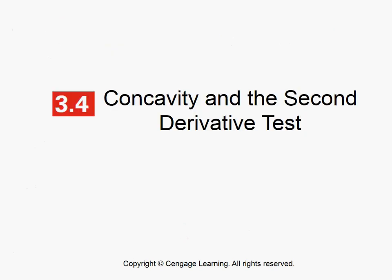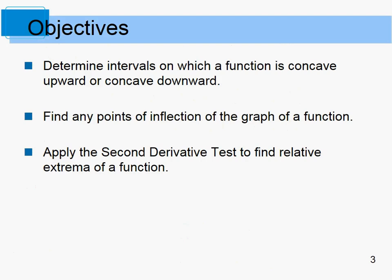Now, 3.4: Concavity and the Second Derivative Test. We want to determine intervals on which a function is concave up or concave down, and find points of inflection. If something is concave up, that means it's bowl-shaped. If it's concave down, it's upside-down bowl-shaped. A point of inflection is where it changes from one shape to the other — where concavity changes.